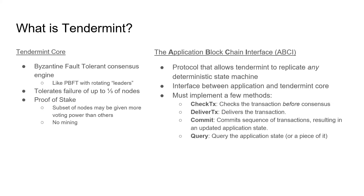Tendermint is really two things: Tendermint Core and the Application Blockchain Interface, or ABCI. Tendermint Core is the actual consensus engine and protocol. It works like practical Byzantine fault tolerance, but with regularly rotating leaders. It tolerates up to one third of the nodes failing arbitrarily, and it's a proof-of-stake protocol, so there's no mining, and validators may or may not have equal voting power — that's up to you, the application developer.